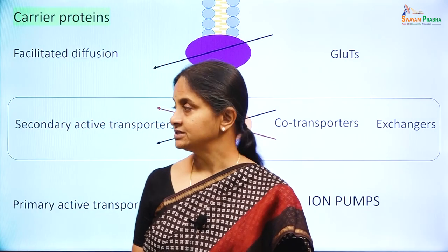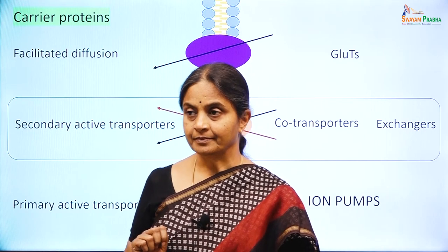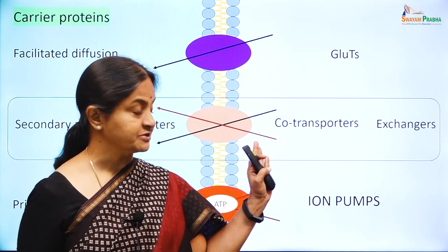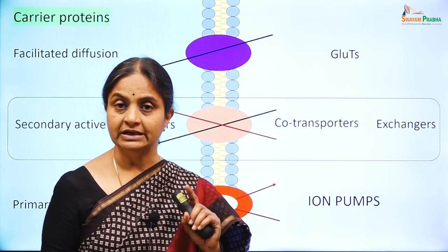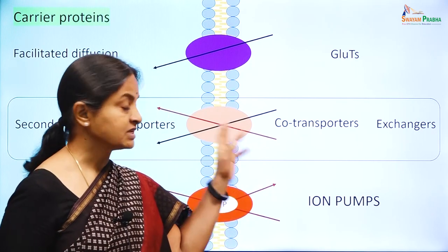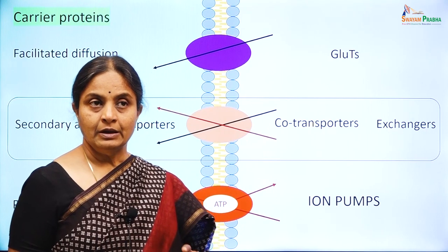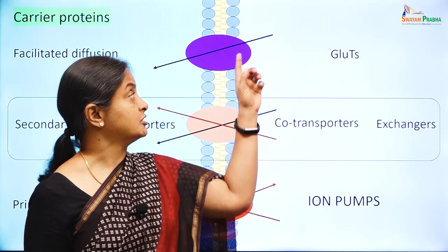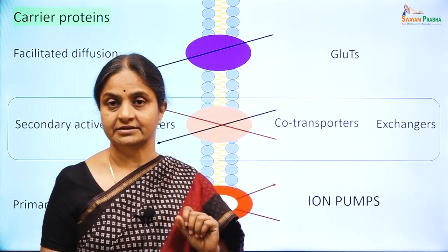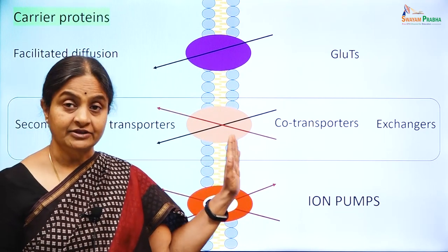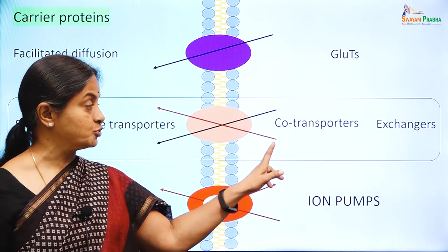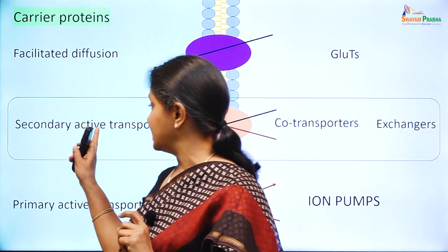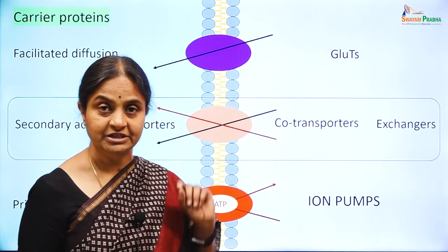Why do we call this process secondary active transport? Active transport means that at least one of the substances transported moves against its concentration gradient — moves uphill. In facilitated diffusion, the substance moves along its concentration gradient. In secondary active transport, one of the 2 substances moves uphill against its concentration gradient, and therefore the process is active transport with reference to that particular substance.